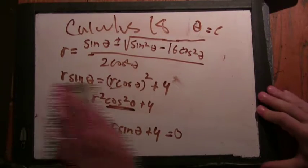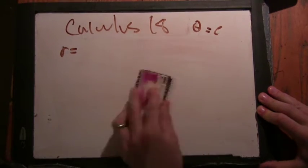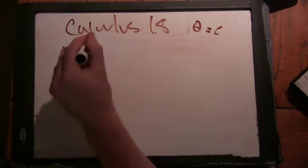Okay, so now we're going to go the other way. I'm going to give you r equals cosine of 2θ.